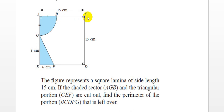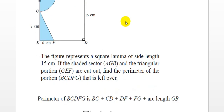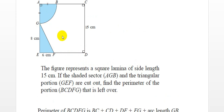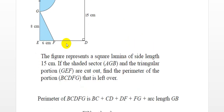The question asks us to find the perimeter of the unshaded portion BCDG — we need to find the lengths BC, CD (which is 15 cm), DF, FG, and the arc length BG. Let's calculate these values separately. For triangle GEF, I apply the Pythagorean theorem to calculate the length of GF.